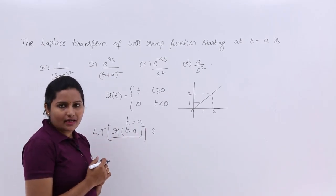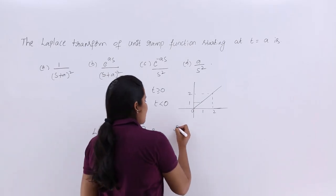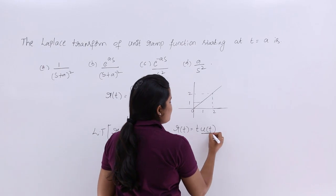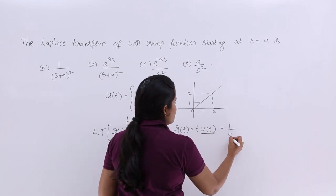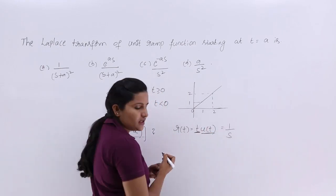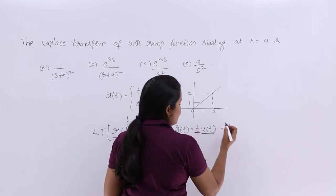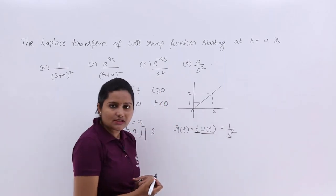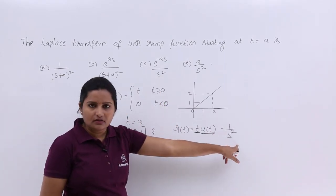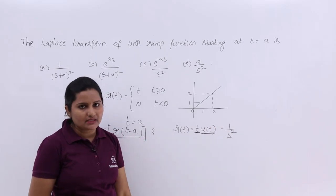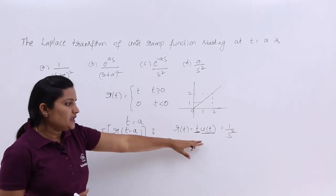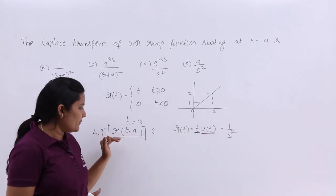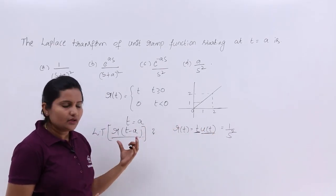So now they are asking the Laplace transform of R(T minus A). We know the general ramp is R(T) equal to T times U(T). The Laplace transform of U(T) is 1 by S. Since we have multiplication by T, in shortcut Laplace transforms, when you have multiplication of T you just square the denominator. So the Laplace transform of R(T) is 1 by S square.